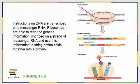Instructions on DNA are transcribed into messenger RNA, while ribosomes are able to read the genetic information inscribed on the messenger RNA, and they use that information to translate the message into the language of amino acids to form a protein.